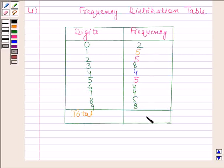On adding all these frequencies, we get 50. This is the required frequency distribution table. So this completes the first part.